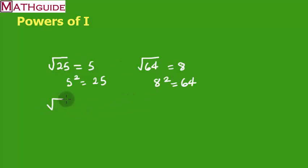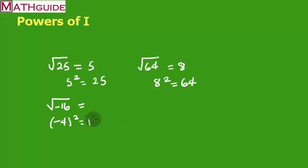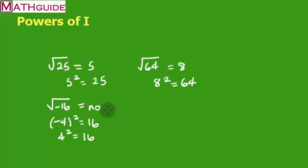The problem we run into is if we take the square root of a negative number, like the square root of negative 16. If you think the answer is negative 4, you have to check it: negative 4 times negative 4 is 16 — not negative 16. And 4 times 4 is also 16. You can't take negative 4 times 4 because when you take a square root, it has to be the same number times itself. So we can't do this — there's no real solution.